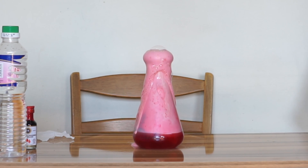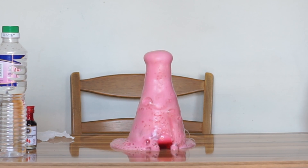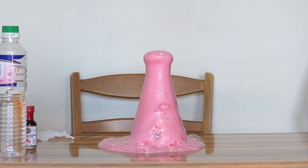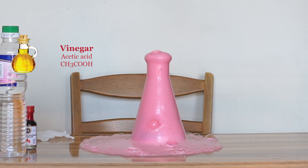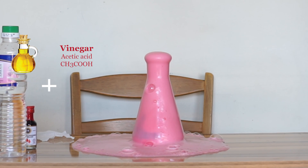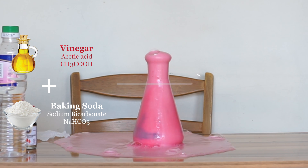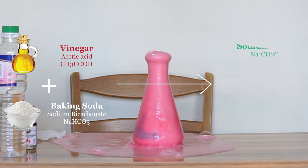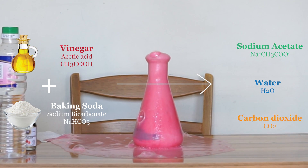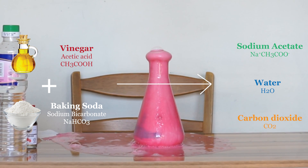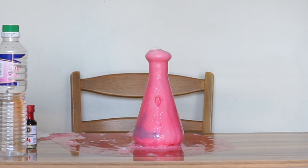This is a chemical reaction. Acetic acid is an acid. Baking soda — sodium bicarbonate — is a base. This is an acid-base chemical reaction. In the case of sodium acetate, carbon dioxide is also produced in the reaction.